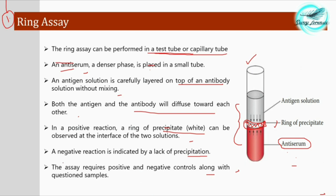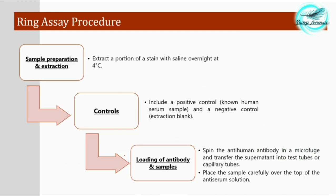This assay requires positive and negative controls along with the question samples. A positive control is a sample which contains the particular entity we are testing — for example, we know it contains blood. A negative control is a sample where we know the particular biological fluid, such as blood, is not present.